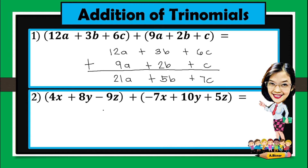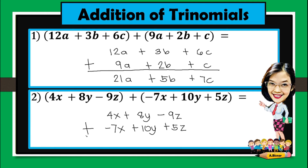For number 2, 4x plus 8y minus 9z plus negative 7x plus 10y plus 5z. So again, let's combine similar terms. 4x plus negative 7x gives negative 3x. Since 8y and 10y are both positive, we have 18y. And then since 9z is negative and 5z is positive, we'll have negative 4z. So the final answer is negative 3x plus 18y minus 4z.